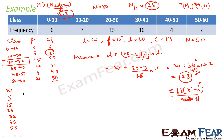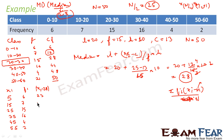Next, we compute |xi − m|, where m = 28. So: |5 − 28| = 23; |15 − 28| = 13; |25 − 28| = 3; |35 − 28| = 7; |45 − 28| = 17; and |55 − 28| = 27.